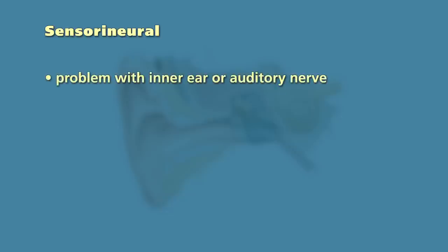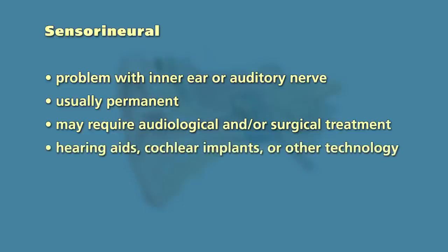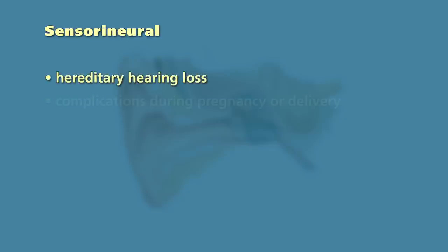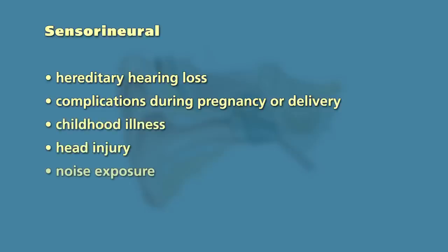A sensorineural hearing loss is caused by a problem in the inner ear or auditory nerve. This loss is usually permanent and may require audiological and/or surgical treatment with hearing aids, cochlear implants, or other technology. Examples of causes of sensorineural hearing loss include hereditary hearing loss, complications during pregnancy or delivery, childhood illness such as meningitis, head injury, and noise exposure.